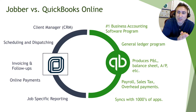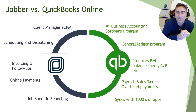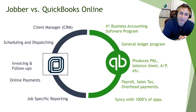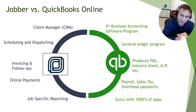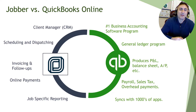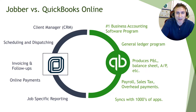QuickBooks Online is a general ledger program used by millions of different businesses. It produces a profit and loss, a balance sheet, accounts payable, and other reports not found in Jobber. If you have payroll, sales tax issues, or overhead payments like rent or equipment purchases, all of that will be housed in QuickBooks. It also syncs with thousands of other applications beyond Jobber, so if you want advanced reporting or want to automate your bill pay, QuickBooks Online can help integrate and streamline those processes.